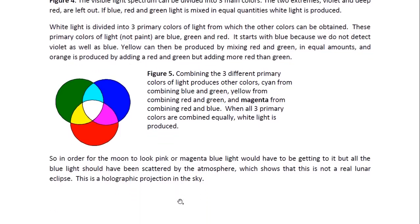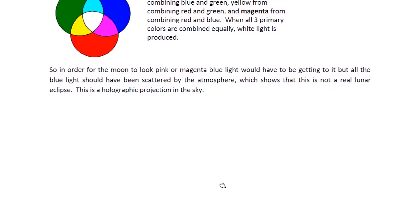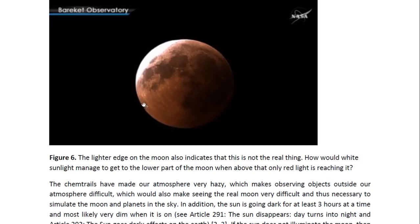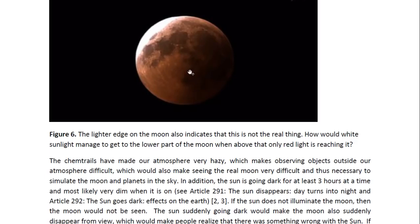So there has to be blue still in sunlight in order for the moon to look magenta or pink. So this is just not possible because all the blue has been scattered out by the atmosphere. So this means that this was a fake eclipse. This could not possibly have been a real eclipse. There is no way that the moon could turn pink. It should be orange or red only. And the other thing that we see is this edge here. As you can see, it's not the same color as the moon is here. It's lighter. And this shows an anomaly, which is just not possible if this was the real moon. And again, indicates that this was a holographic projection in the sky.